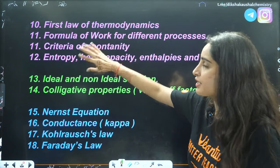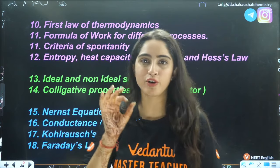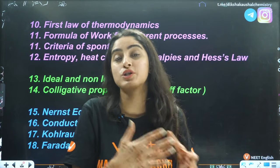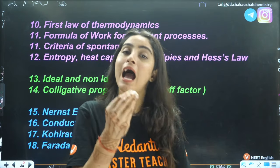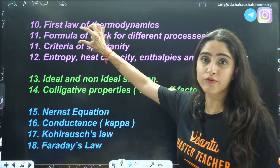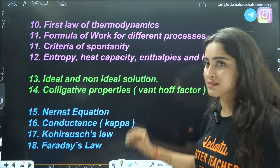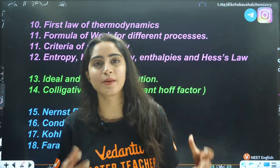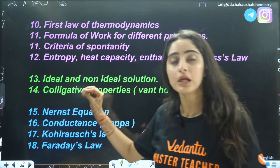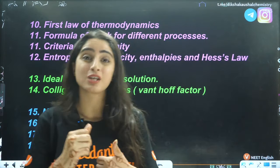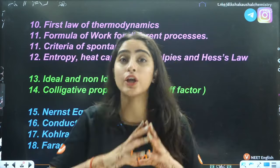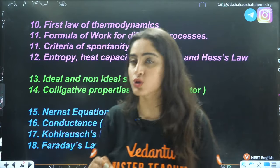Next is criteria of spontaneity using the Gibbs-Helmholtz equation — when delta G is positive or negative, spontaneous or non-spontaneous, based on entropy and enthalpy. Then we have entropy and heat capacity: entropy questions can be conceptual or reaction-based on when entropy increases or decreases. For heat capacity, direct questions on molar heat capacity, specific heat capacity, and the relation of heat capacities with delta U (internal energy) and enthalpy are very important.